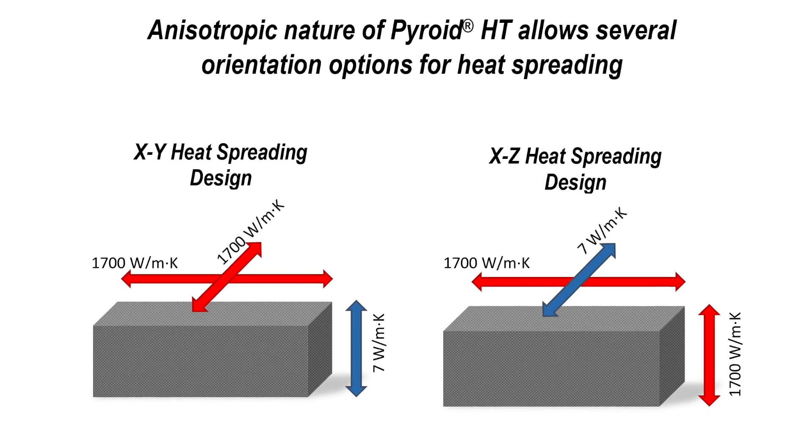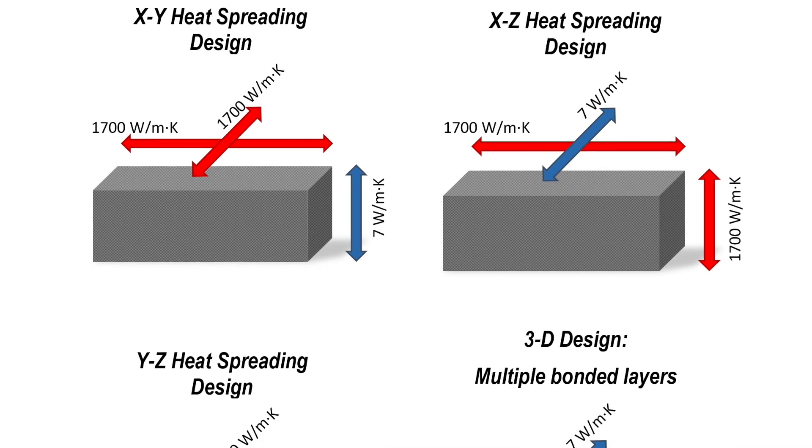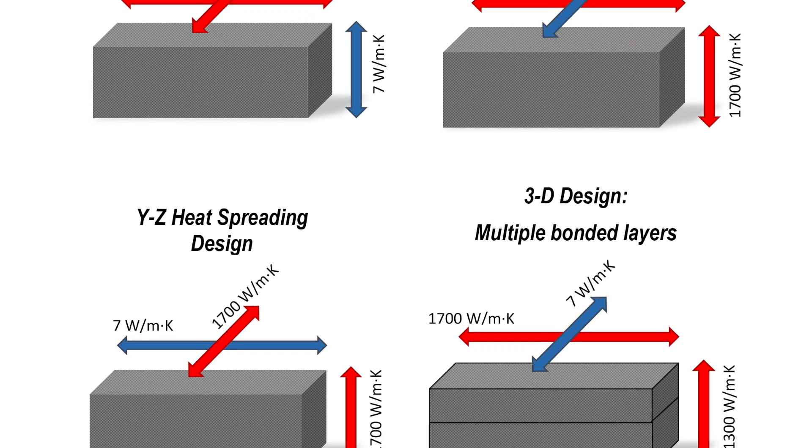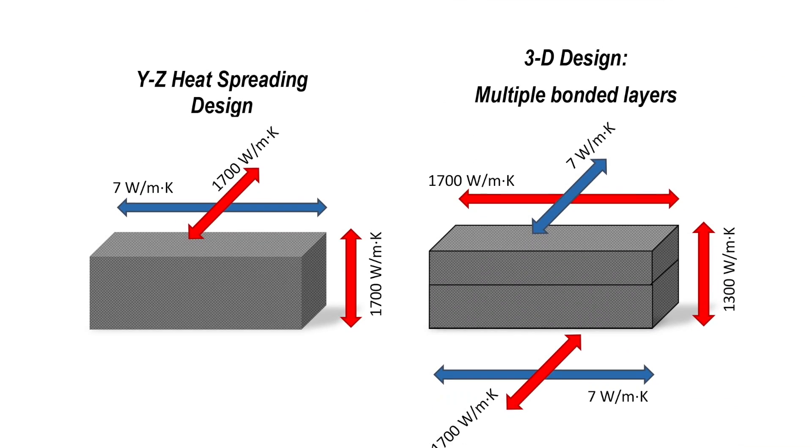In addition, the material is anisotropic, which means it has different properties through its different planes. This allows the opportunity for preferential heat spreading based on specific customer needs.